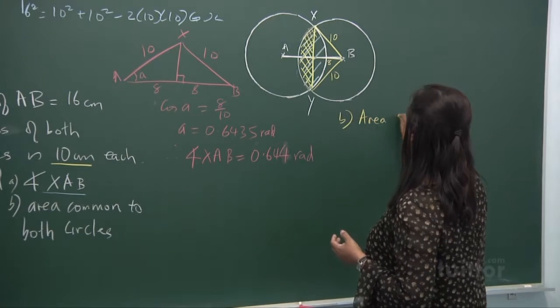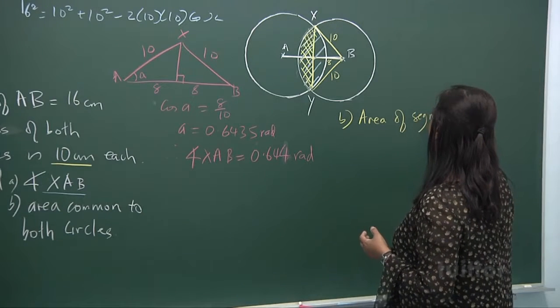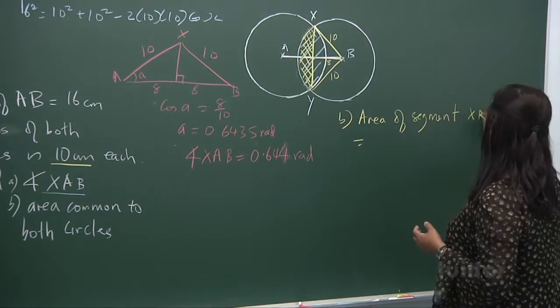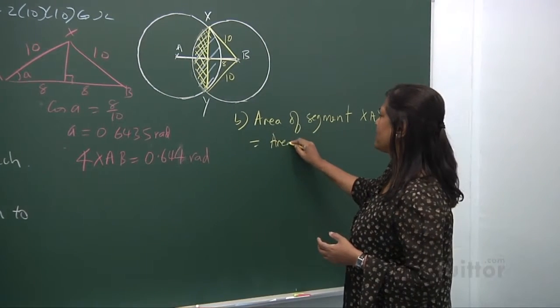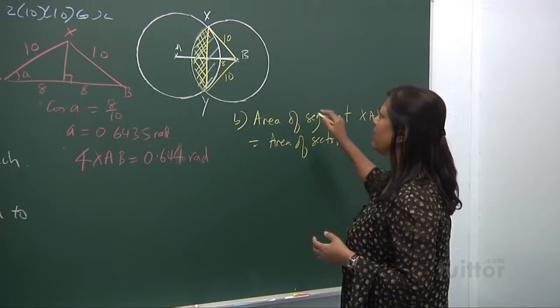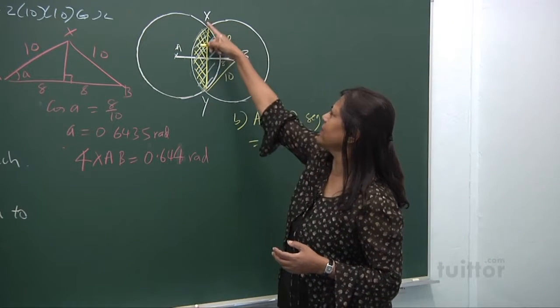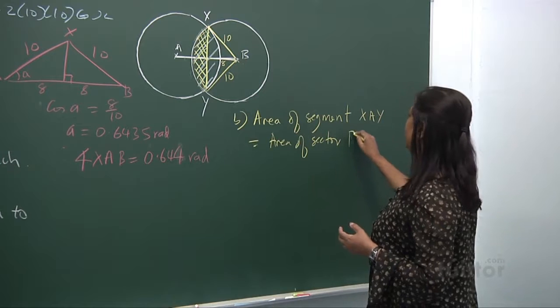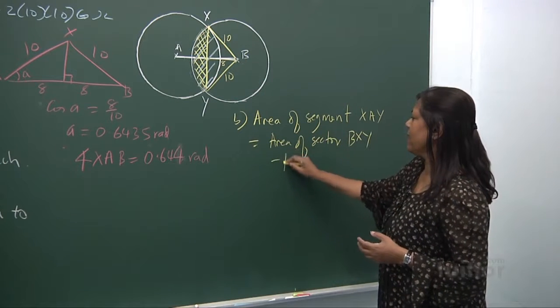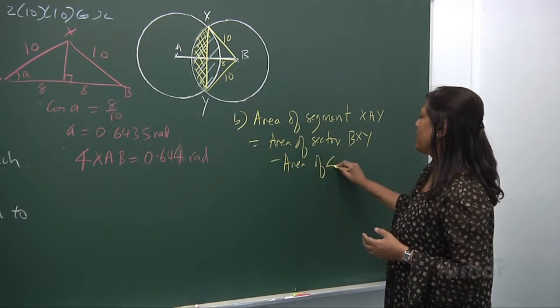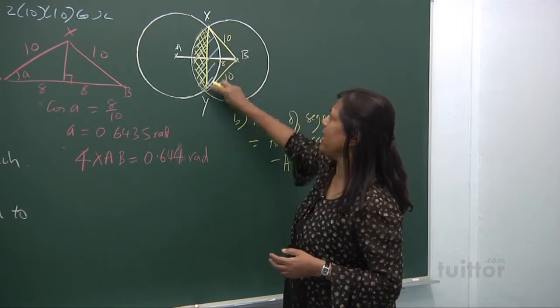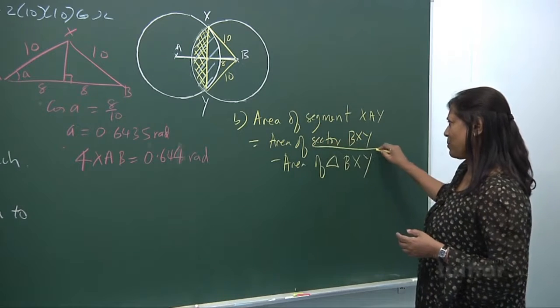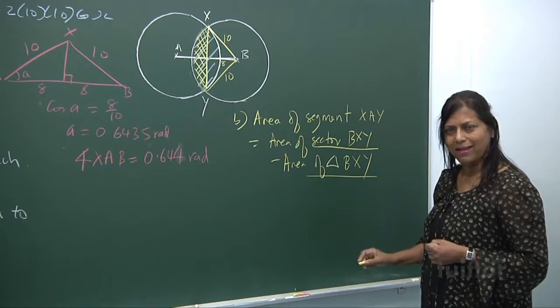Part B, area of segment. I think now that you're getting better, what you do? Area of segment X, A, Y is equal to area of sector. What sector are you talking about? Look at this sector. We can put B, X, Y. Sector B, X, Y minus the area of triangle. What triangle are you talking about? This triangle B, X, Y. But let's put this way. Sector B, X, Y minus triangle B, X, Y.